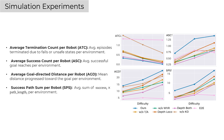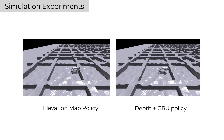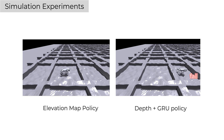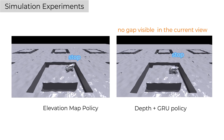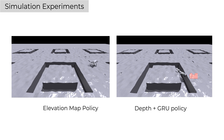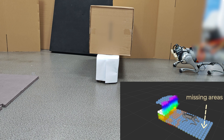To evaluate policy generalization and maneuverability, we generate large-scale, randomized, cluttered navigation terrains at varying difficulty levels and define relevant metrics. Results are shown here. We also test terrain representation capabilities; results indicate that combining depth maps with RNNs struggles to reliably characterize terrain, highlighting the advantage of our multi-layer elevation map.